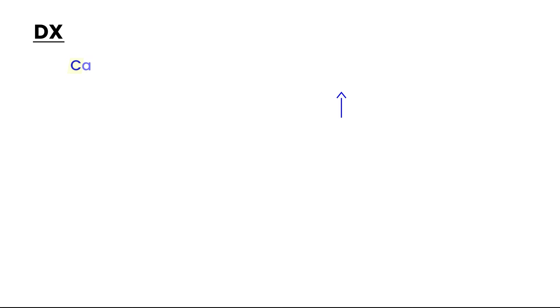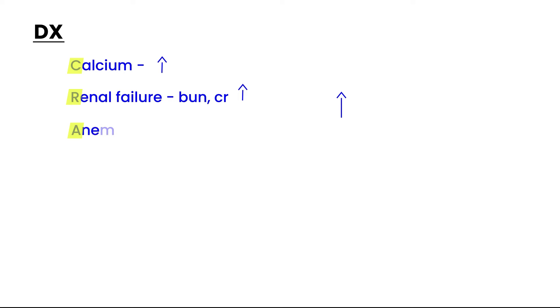To help remember the diagnostic tests, there is a mnemonic: CRAB. C is for calcium — there is a state of hypercalcemia, so this will be elevated. R is for renal failure, checked by measuring BUN and creatinine, which will be elevated. A is for anemia, checked with a simple CBC. And B is for bone lesions, seen on x-rays when you do a skeletal survey.